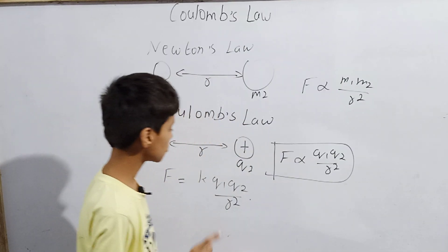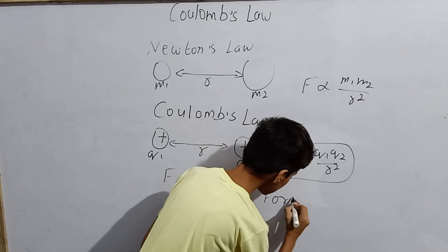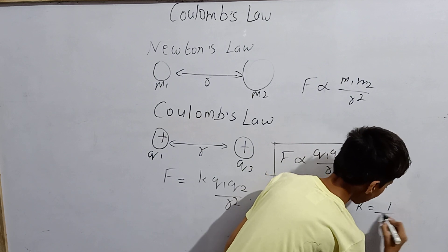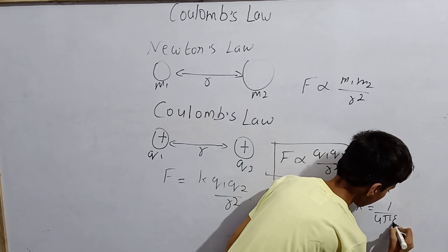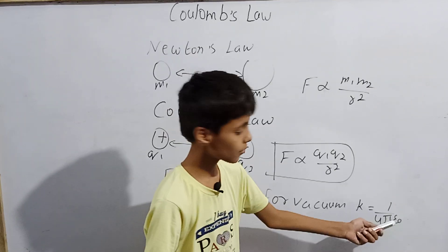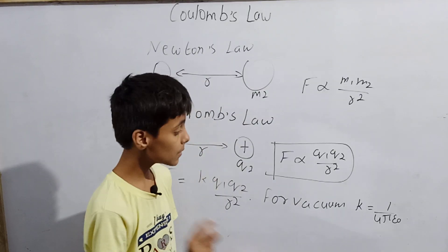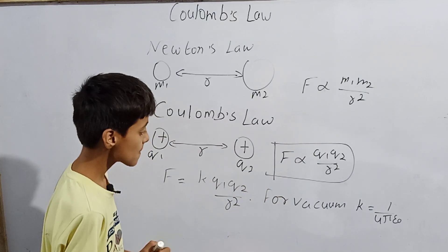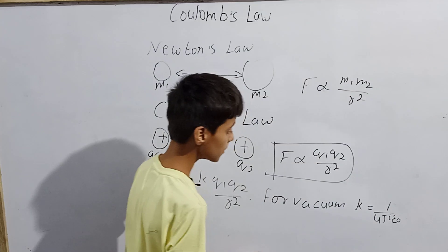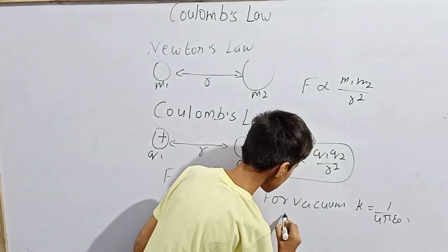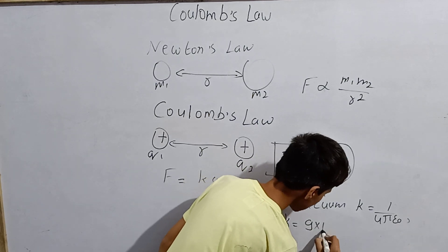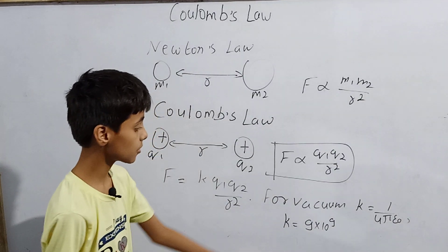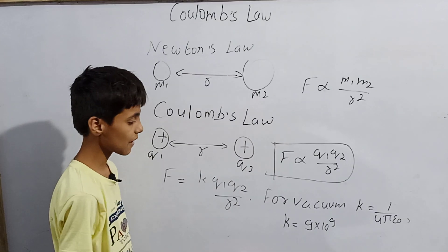For vacuum, the constant K equals 1/(4πε₀), where ε₀ is the permittivity of free space. When we solve for this, we get K equals 9×10⁹ in SI units. We can put in the other values and also derive the units, just like in gravitation we derived the unit of the universal gravitational constant G.